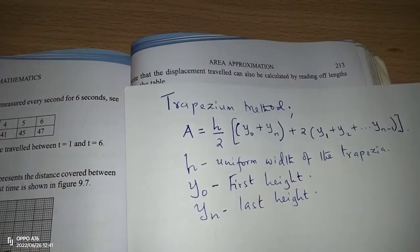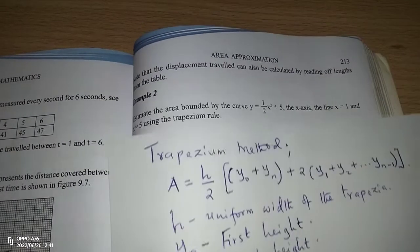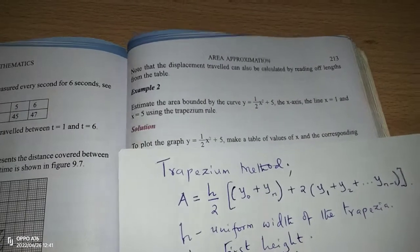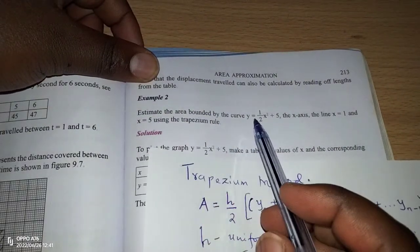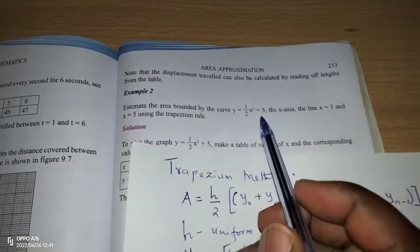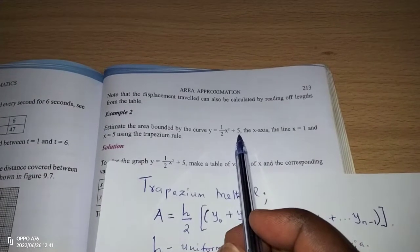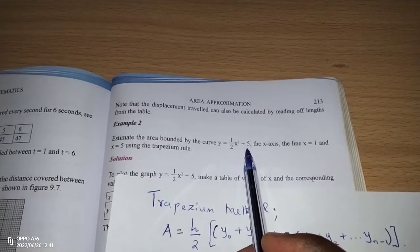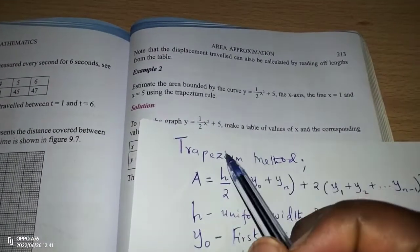Therefore, we're going to look at an application of this formula in an example. We are told to estimate the area bounded by the curve y equals ½x² + 5, the x-axis, and the lines x equals 1 and x equals 5, using the trapezoidal rule.